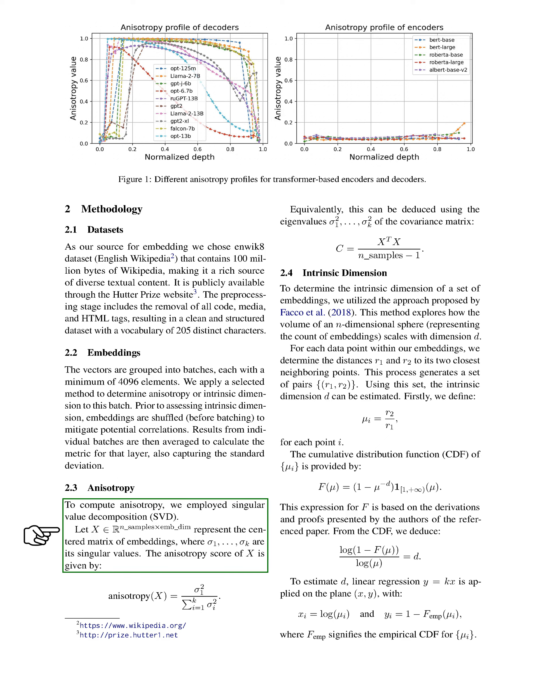To compute anisotropy, we used singular value decomposition (SVD). We represented the centered matrix of embeddings as X, and its singular values as σ. The anisotropy score of X is given by the square of the first singular value divided by the sum of the squares of all singular values. This can also be calculated using the eigenvalues of the covariance matrix.